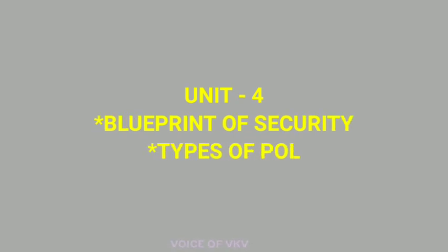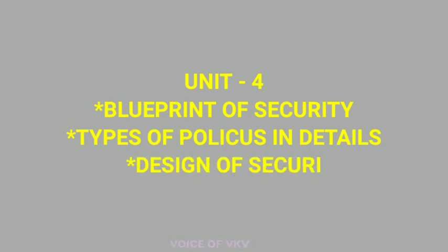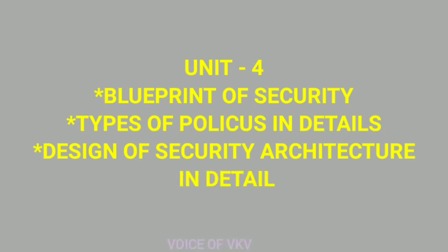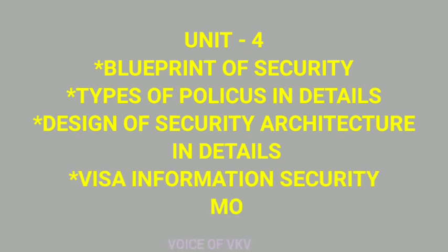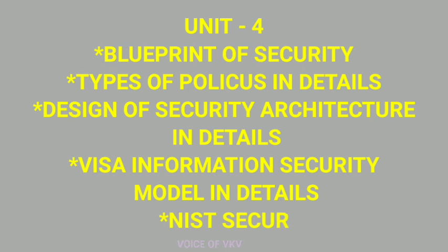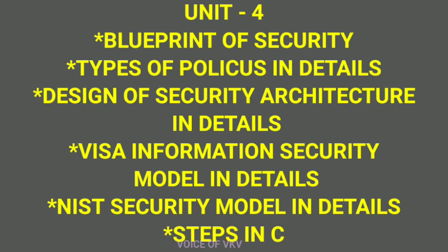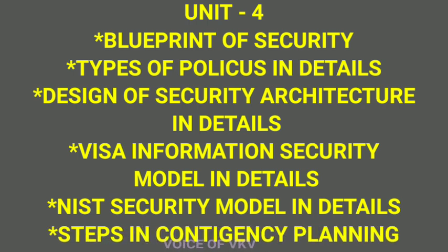Next is the 4th unit, which has six important topics. First is blueprint of security. Second is types of policy in detail. Third is design of security architecture in detail. Fourth is VISA international security model in detail. Fifth is NIST security model in detail. And sixth is steps in contingency planning. These are very important topics and will give you a lot of detail in Part B.